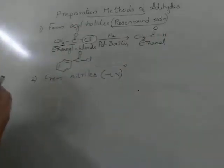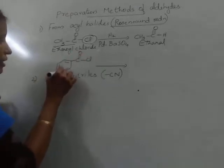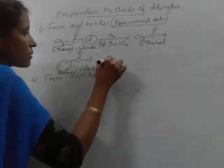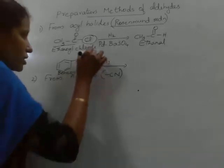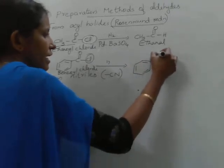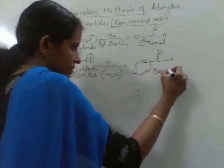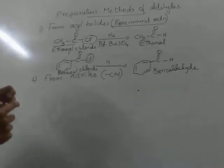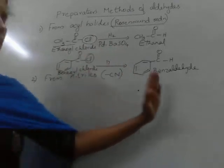Another example: take a benzene ring with a CO group, which is called the benzoyl group. This compound is benzoyl chloride. Benzoyl chloride treated with the same reagent — hydrogenation with palladium barium sulphate catalyst — the halogen atom is substituted by hydrogen, and here we get an aromatic aldehyde. The product is benzaldehyde. This reaction of an acyl chloride with hydrogen in the presence of palladium barium sulphate to give the corresponding aldehyde is called Rosenmund reduction.